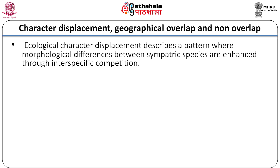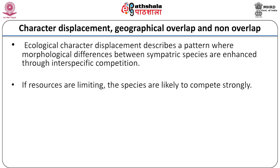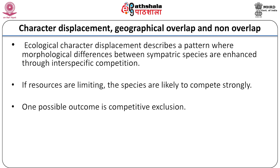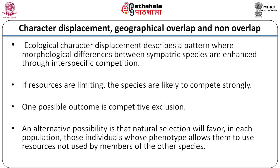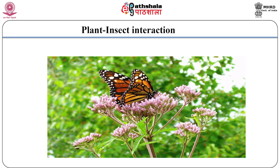This theory is quite simple: assume that two similar species come into contact. If resources are limiting, the species are likely to compete strongly. One possible outcome is competitive exclusion — the superior competitor will survive and the inferior one will become extinct. But another possibility is that natural selection will favor individuals in each population whose phenotype allows them to use resources not used by members of the other species. The outcome may be that the populations diverge in phenotype and resource use, reducing resource competition and permitting coexistence.